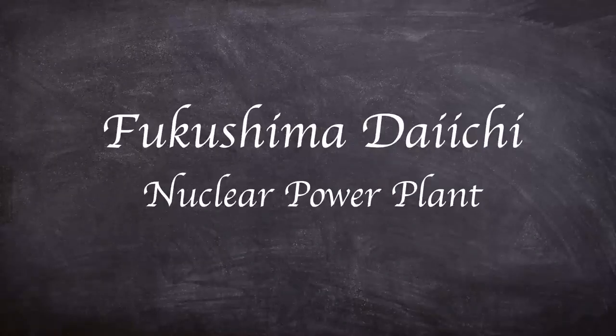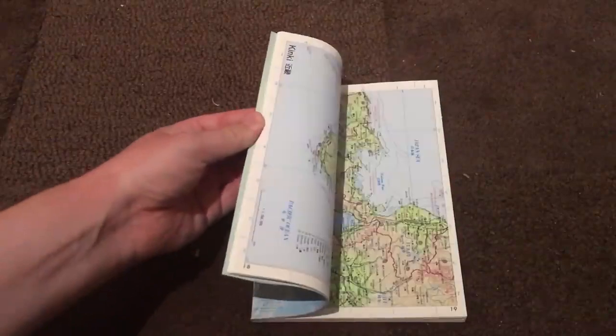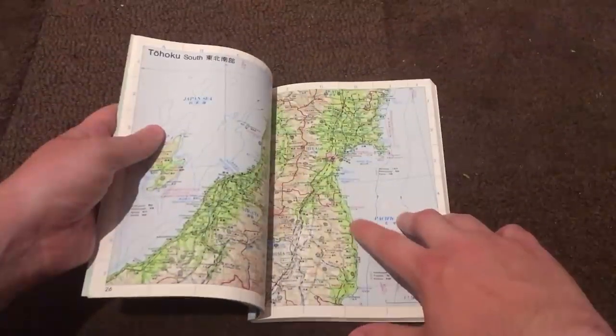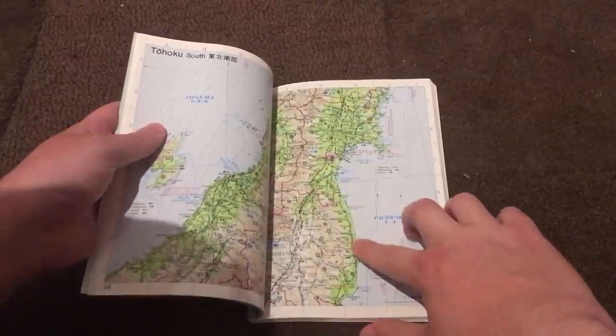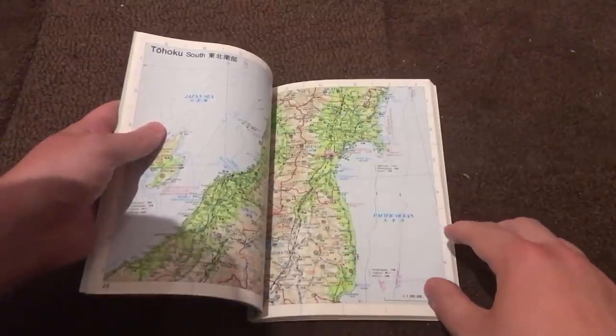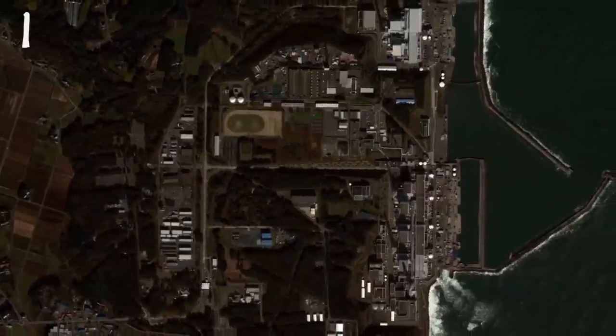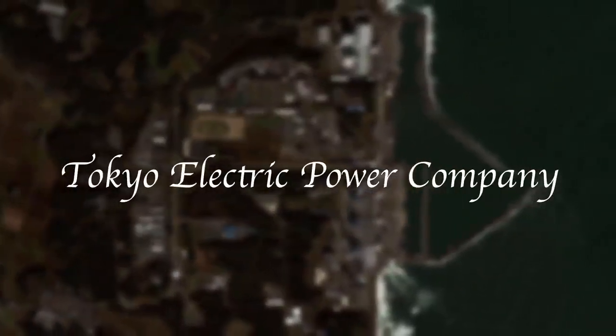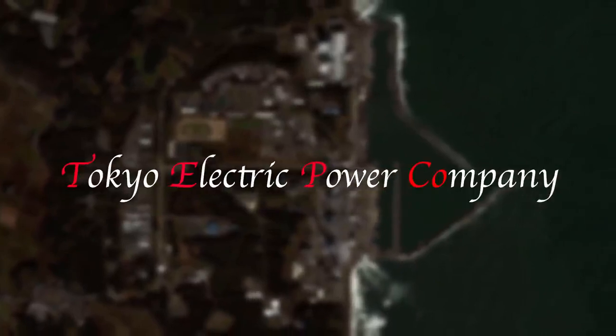The Fukushima Daiichi NPP site lies approximately 220 kilometers north of Tokyo at almost the midpoint of the Pacific coast. It straddles Okuma and Futaba Townships in Fukushima Prefecture. The site is approximately 3.5 kilometers large and is operated by Tokyo Electric Power Company, or TEPCO.